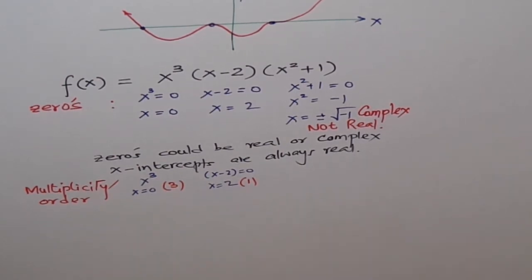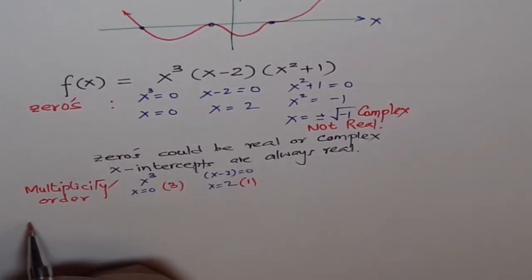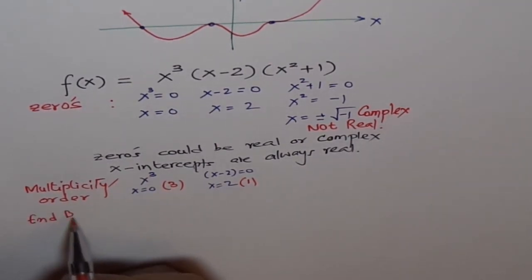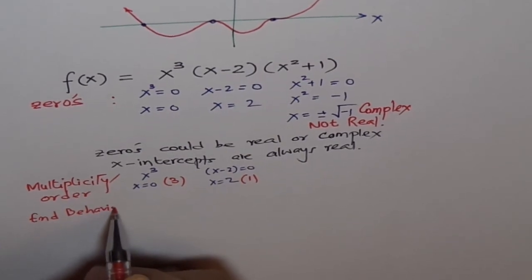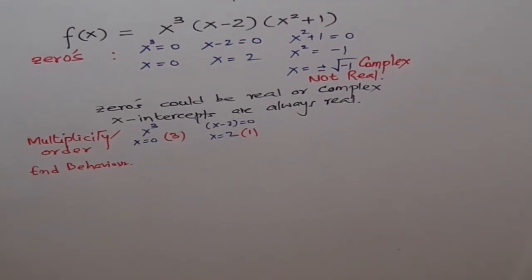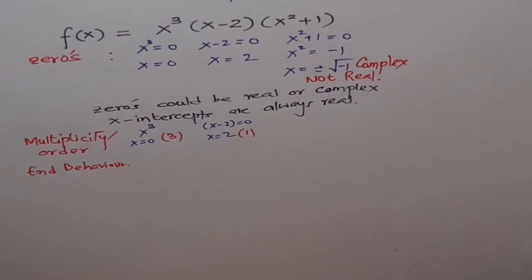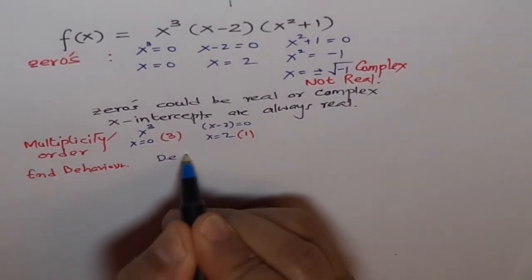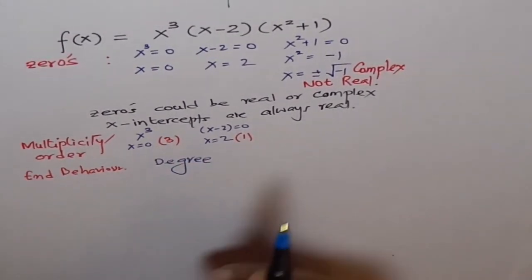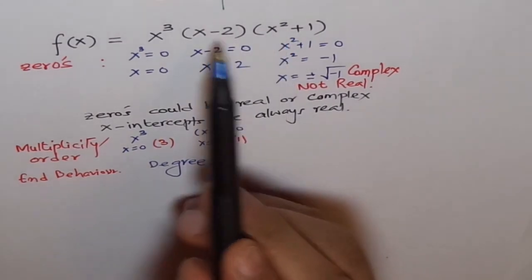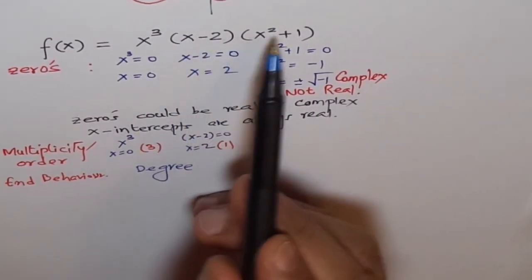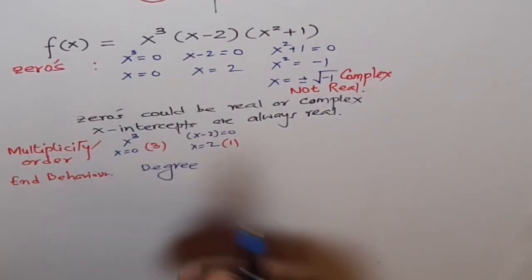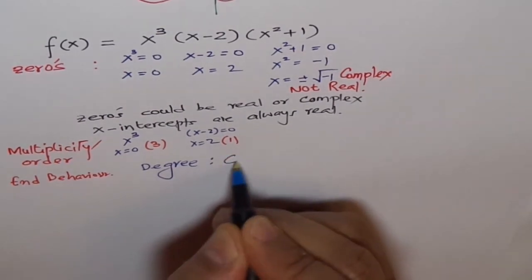Now, let's look into end behavior. For that we need degree. And what is the degree? Two times one, three. I mean two plus one, three. And three plus three? Six. So degree is six.